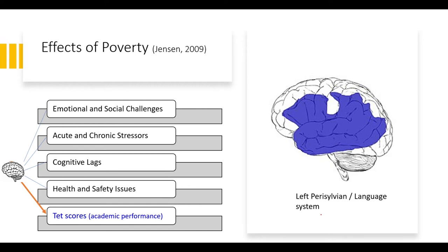There are four general types of effects that Jensen has synthesized from the available literature: emotional and social challenges, acute and chronic stressors, cognitive lags, and health and safety issues. All of these affect the brain, and a brain affected by these will have suboptimal performance on tests. I will particularly show how these factors can affect the perisylvian — or language — system.